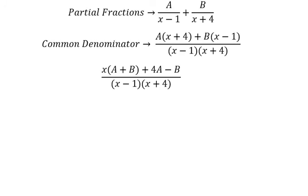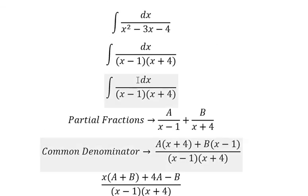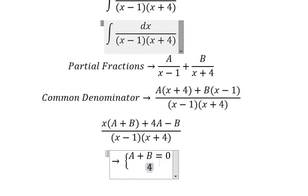Next, we need to do the system of equations. A plus B equals zero, because here we don't have x. 4A minus B equals 1.